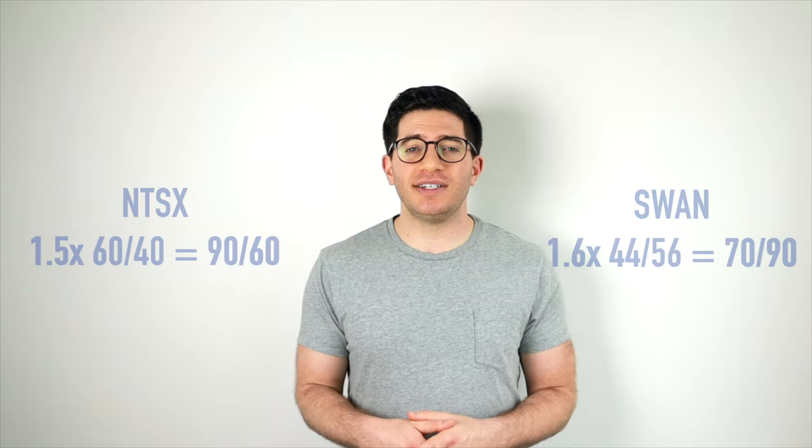Note that NTSX's treasury bond futures ladder has an effective average duration of about 7 years, while SWAN's treasury bond ladder aims to match the duration of the US 10-year treasury note.